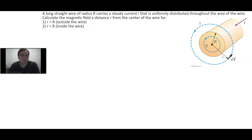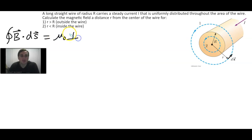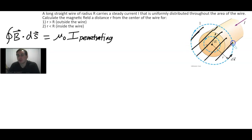We're going to use Ampere's Law twice. Ampere's Law is the closed loop line integral of B dot ds, where ds is a differential tangent vector element, and that equals μ₀ times I penetrating. A lot of people write this as just I or I enclosed, but it's I penetrating — penetrating through the area of one of the circles we choose, which has a certain area.